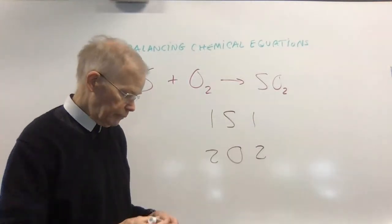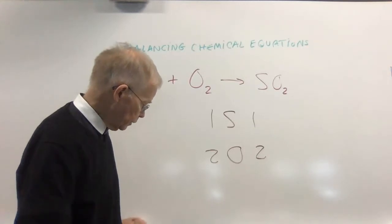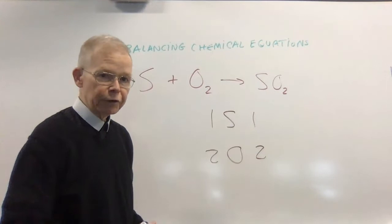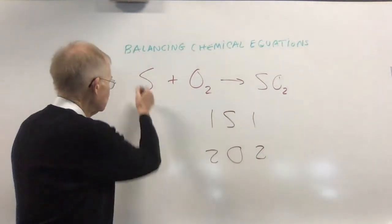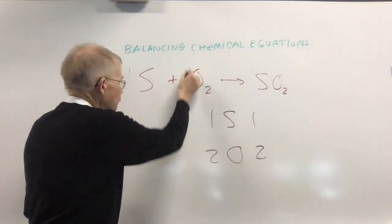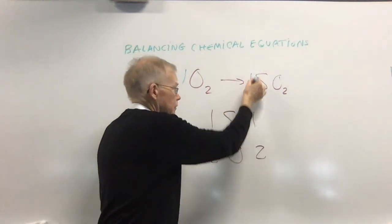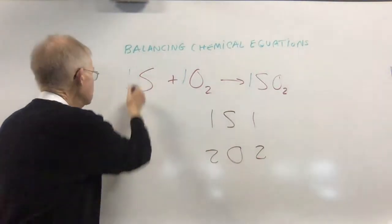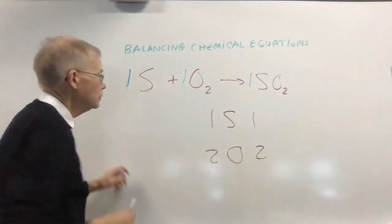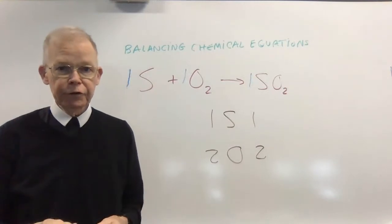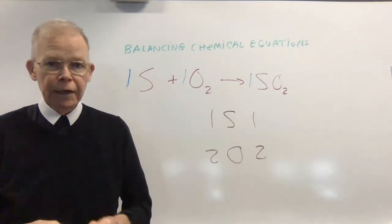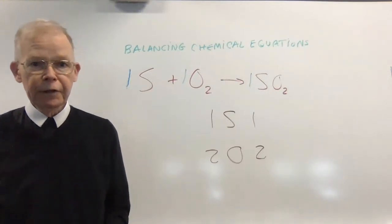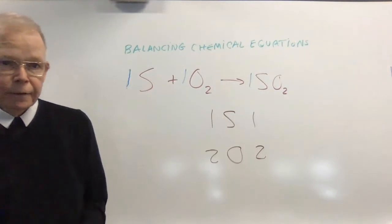So the final step for me, and hopefully for you, is to put down coefficients that would show that the equation is balanced. And for that purpose, I'm going to enter a coefficient of 1 in front of each of the substances. That accounts for one atom of sulfur, one molecule of oxygen, and one molecule of sulfur dioxide. And the counting process, or the bookkeeping on the atoms here, shows that they are matched on both sides.